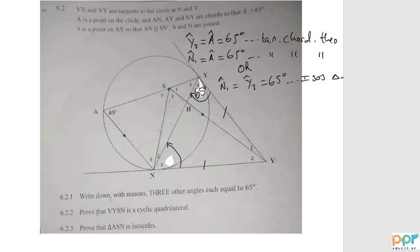Another angle that's equal to 65 degrees is angle S1. Because the lines are parallel, we have corresponding angles. So angle S1 equals 65 degrees because of corresponding angles.